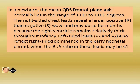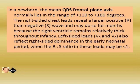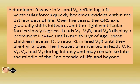In a newborn, the main QRS frontal plane axis normally lies in the range of plus 110 to plus 180 degrees. The right-sided chest leads reveal a large positive R and small negative S wave and may do so for months because the right ventricle remains relatively thick throughout infancy. Left-sided leads V5 and V6 also reflect right-side dominance in the early neonatal period, when the R-S ratio in these leads may be less than one — that is, R small and S deeper. A dominant R-wave in V5 and V6 reflecting left ventricular forces quickly becomes evident within the first few days of life.